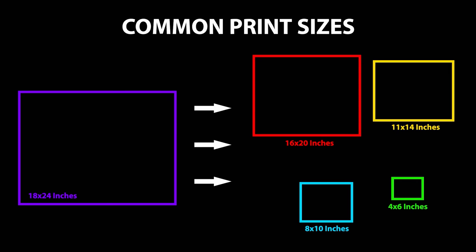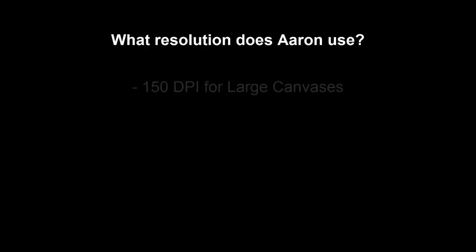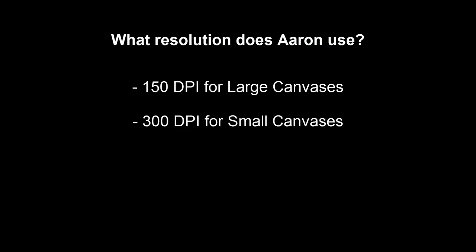Extra large pieces are expensive to print and don't display full size on most computer screens, so I don't go much above 24x18 for practical reasons. For the resolution setting, I usually choose 150 DPI for large pieces and 300 for smaller ones. For most artwork and documents, printing at 300 DPI is preferred, but the difference in print quality is not very noticeable on large pieces because you'll be looking at the prints from farther away.